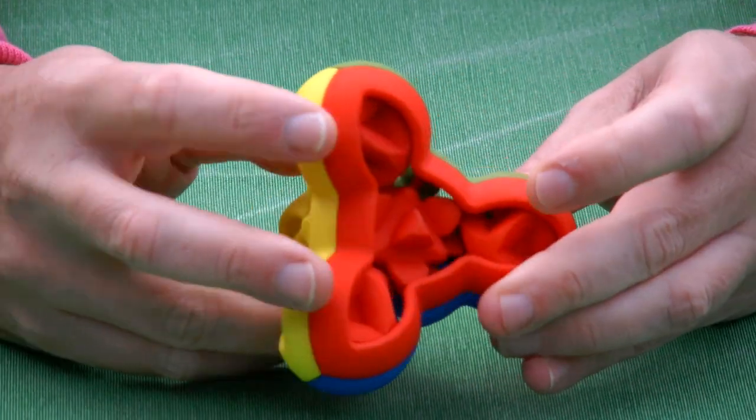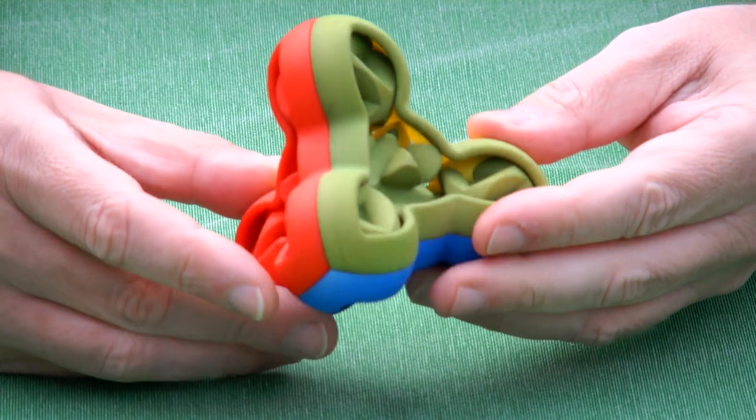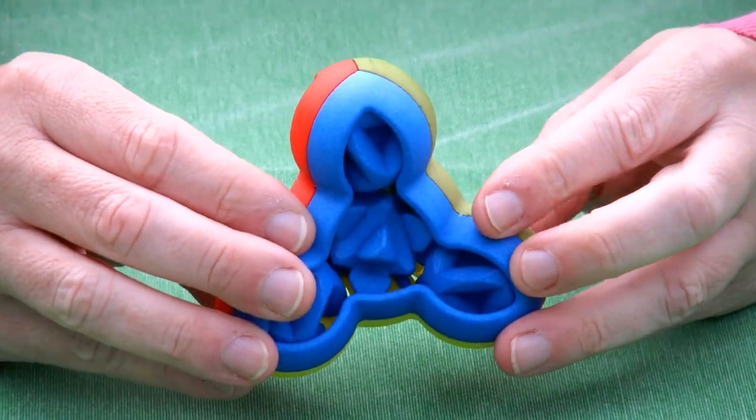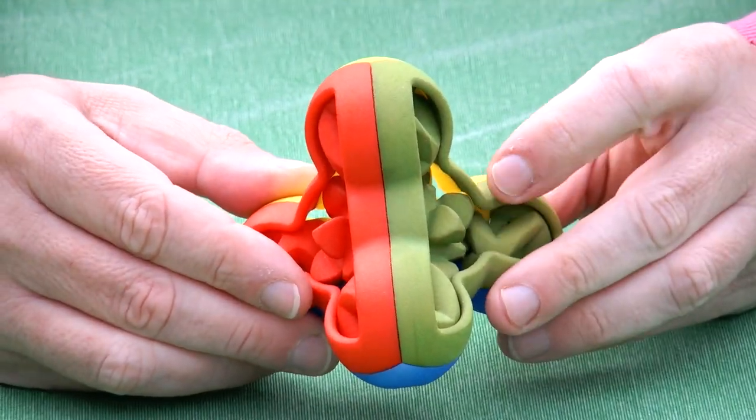We have a yellow side, a red side, a green side, and at the bottom a blue side. What we have here are a set of gears.